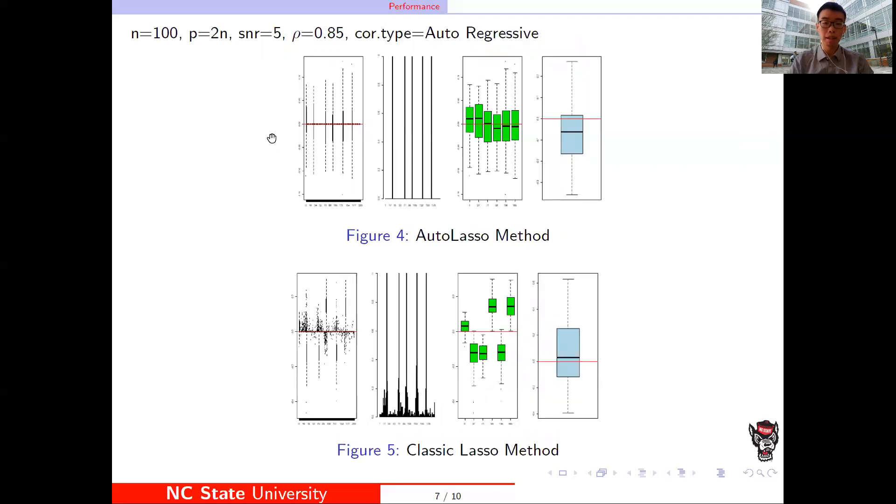This part is in the same condition, but the correlation type is autoregressive. You can see here the AutoLasso method is much better than the classical Lasso method.